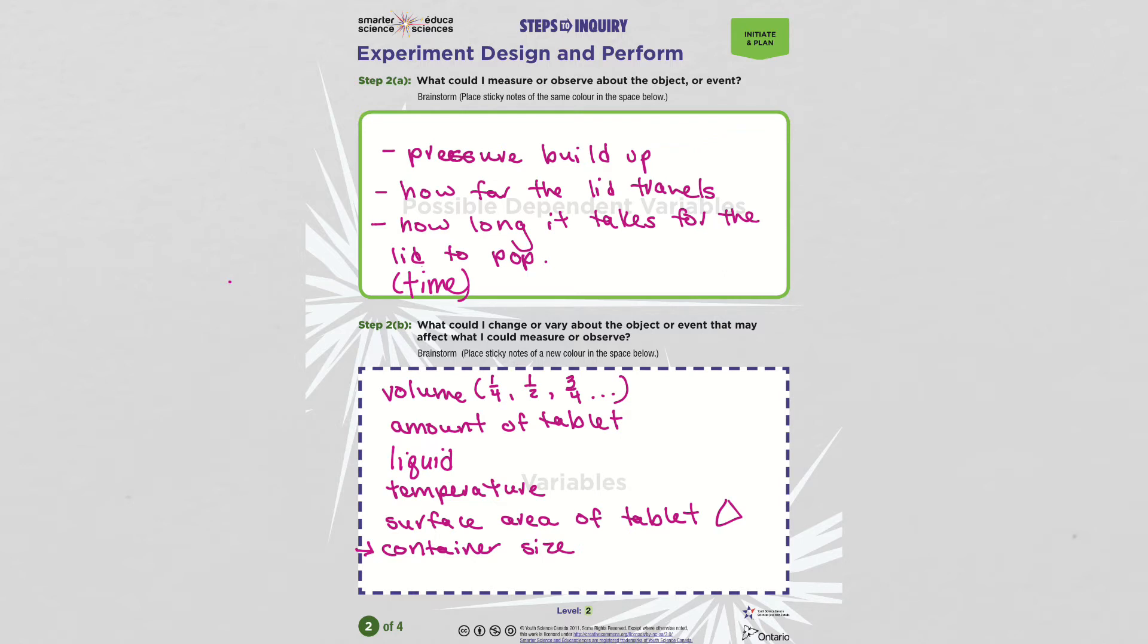And then we took a look at, we thought about ways we could change the object or the event that might affect what you could measure. I could change the volume of the liquid I use. And this list here, we can only change one thing and keep everything else constant.